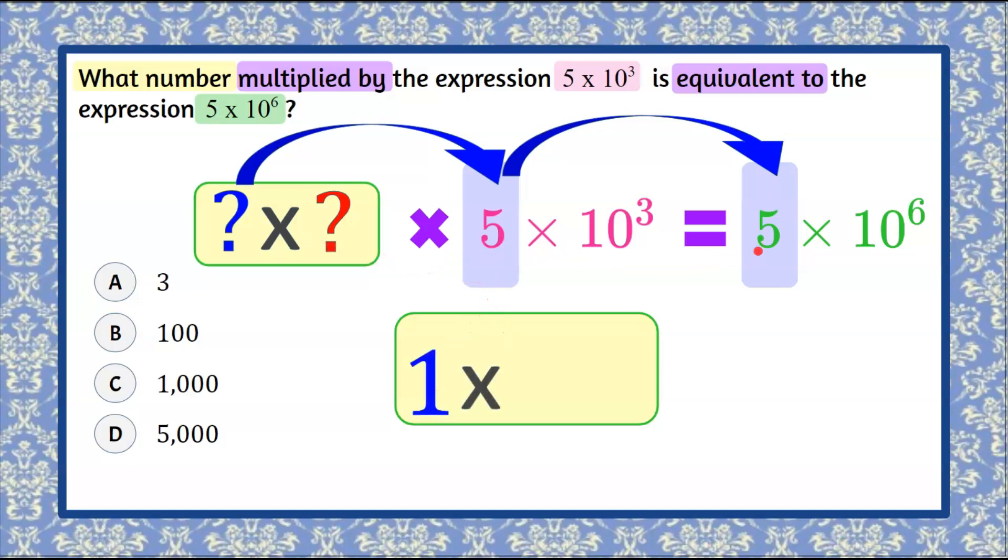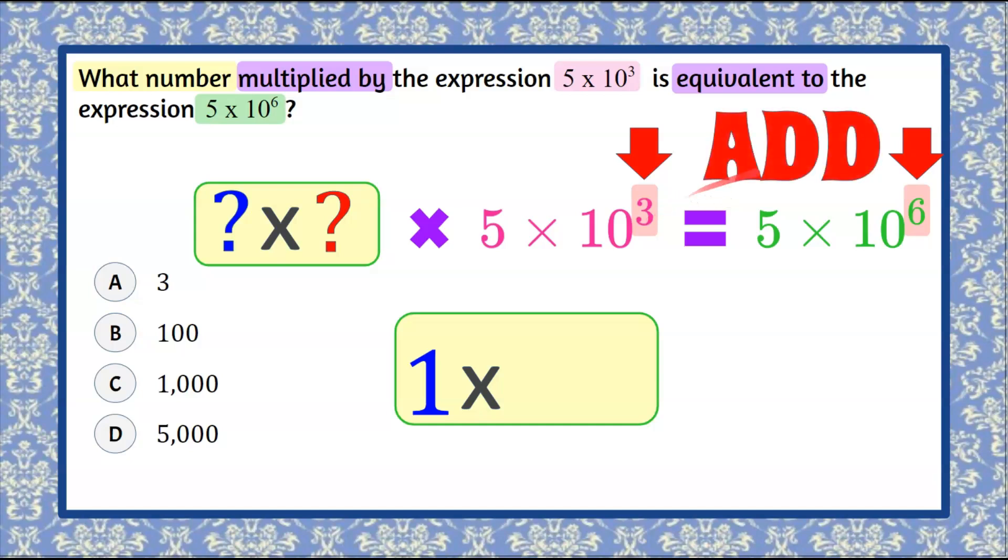So we're not changing the value of the factor. Now let's erase our board and now we're going to look at our powers of 10. We want to go from a power of 10 as 10 cubed to 10 to the sixth. We know our exponent rules that when we're multiplying a power by a power that have the same base, we're going to add the exponents. So we want to know what number added to 3 is going to give us 6. And we know that 3 plus 3 is 6, so we know that this missing power has to be 10 cubed, 10 to the 3.